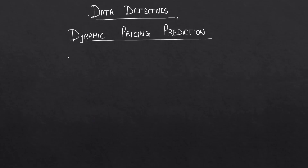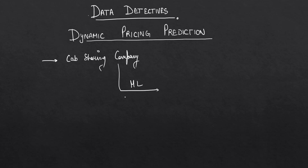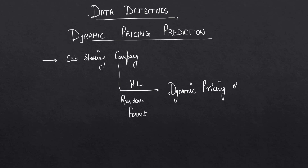Hello and welcome to Data Detectives. Today we are going to see a machine learning project in 15 minutes related to dynamic pricing prediction. We will be using the features of a cab sharing company, and using the different features or columns available from the dataset, we will be applying a machine learning model — Random Forest — to predict the dynamic pricing.